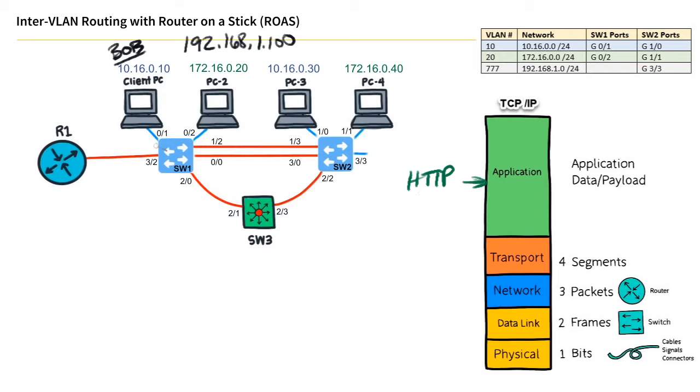Before Bob's computer can send that information on the wire, at the transport layer, the HTTP protocol is using a layer 4 protocol. At layer 4, we're going to use TCP - Transmission Control Protocol. TCP cares about making sure we have a good connection, so before making web requests, Bob's computer does a three-way handshake with the server: it says 'hey, are you open for business?' and the server replies, and then Bob confirms.